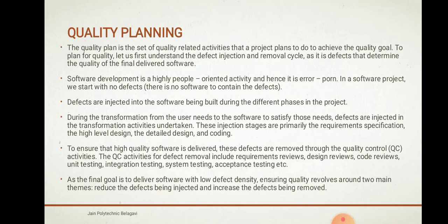During the transformation from user needs to software that satisfies those needs, defects are injected. The defect injection stages are primarily the requirement specification, high-level design, detailed design, and coding. To ensure high-quality software is delivered, these defects are removed through quality control. Quality control activities for defect removal include requirement reviews, design reviews, code reviews, unit testing, and other phases.